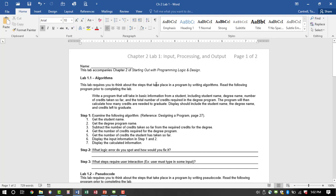This is the lab sheet, Lab 1.1. I want you to write a program that will take basic information from a student, including the student name, degree name, number of credits taken so far, and the total number of credits required. The program will then calculate how many credits are needed to graduate. Display should include the student name, degree name, and credits left to graduate. Output should include the student name, degree name, and credits left to graduate.